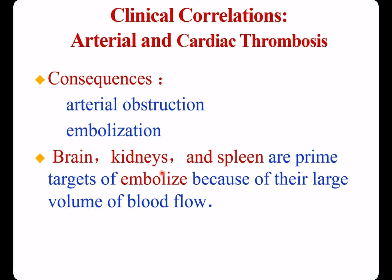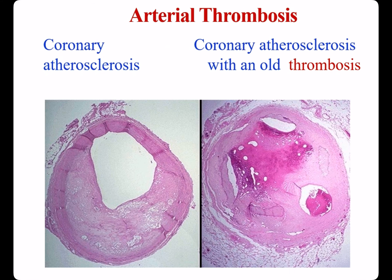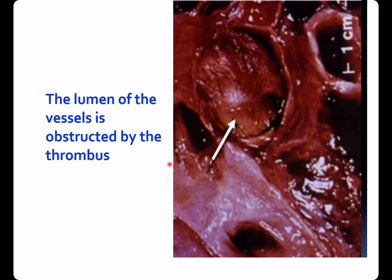Arterial and cardiac thrombosis — consequences. Arterial obstruction can embolize to the brain, kidney, and spleen because of their large volume of blood flow. This is coronary atherosclerosis, and this is coronary atherosclerosis with old thrombosis. The lumen of the vessel is obstructed by the thrombus.